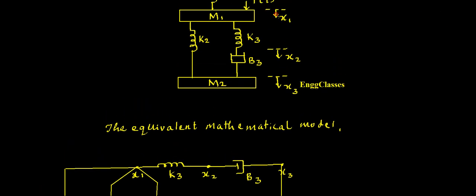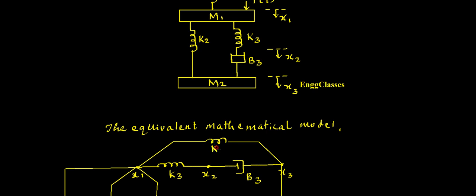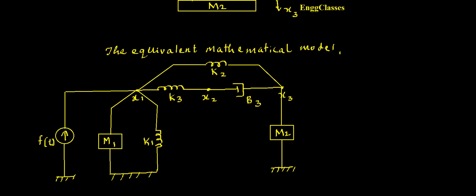Between x1 and x3 there is the spring constant k2, so I need to draw that between x1 and x3. Here I am going to sketch the spring constant k2 and join it to the point x3. I am going to call it as k2. So this is the equivalent mathematical model for the given mechanical system.